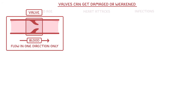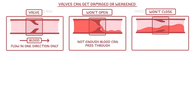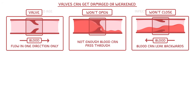So the two main problems that we get with the valves are either that not enough blood can pass through — for example because the valve has become stiff so it won't open fully — or the valve doesn't close properly anymore, and so blood can leak backwards.